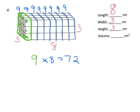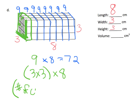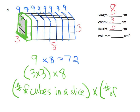Now, how did we get 9? A nice shortcut for getting that 9 would be 3 times 3 — that's how we got the 9. So we could do 3 times 3, and then multiply by 8 because that's how many slices there are. So another way to think about this is: number of cubes in a slice of bread, times the number of slices of bread.